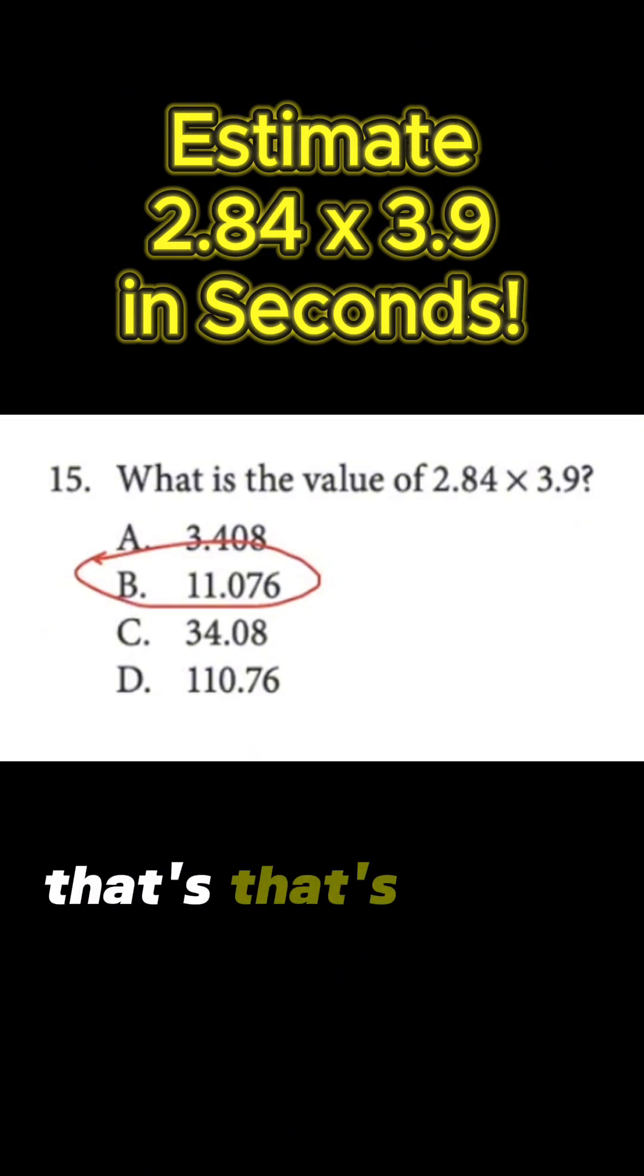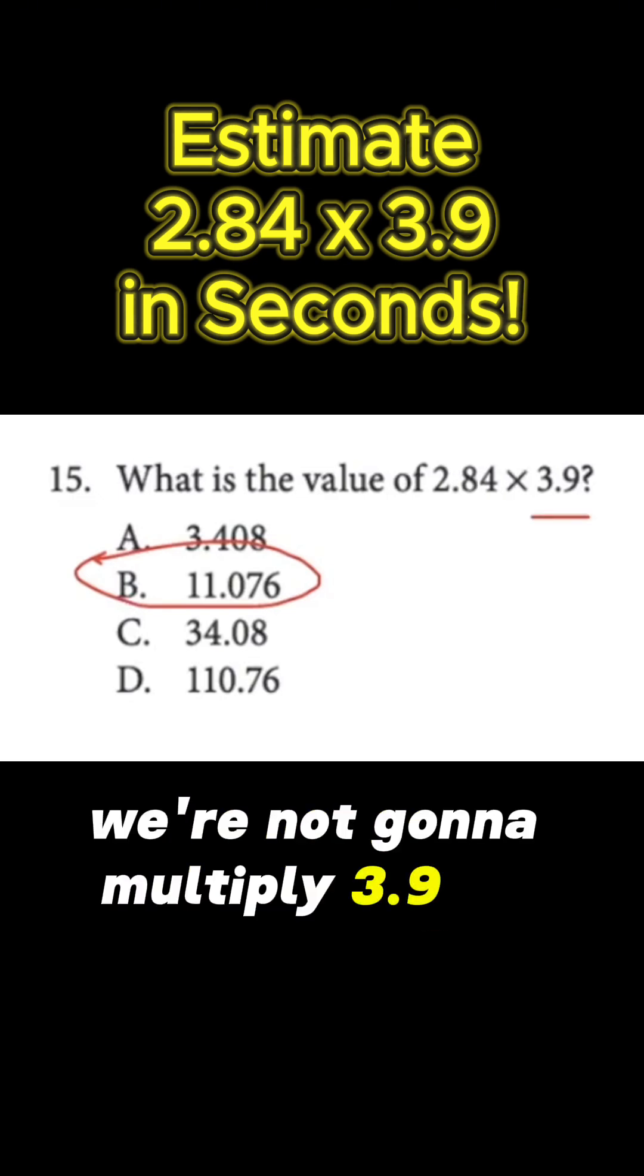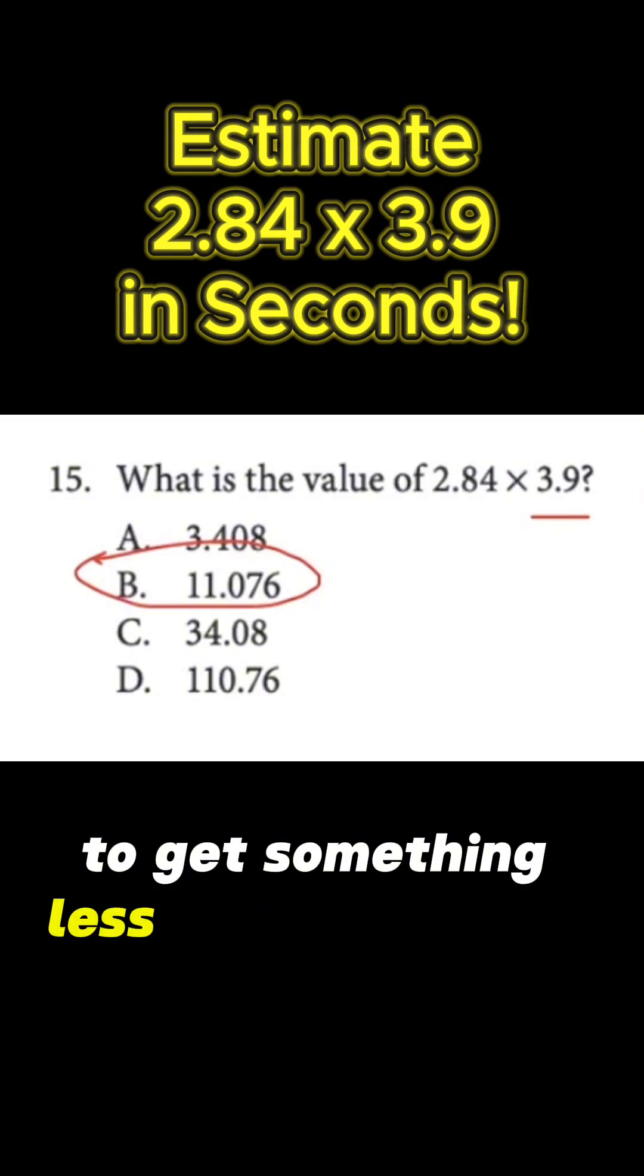That's less than 3.9. We're not going to multiply 3.9 by something bigger than 1 and get something less. A's gone. That's silly.